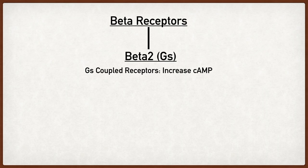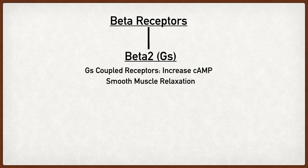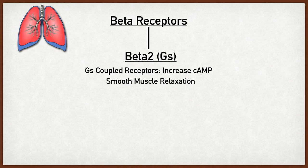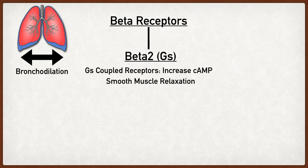The next beta receptor type is beta 2 receptors. Again they're coupled with GS proteins which ultimately increase cyclic AMP levels. The main thing to remember with beta 2 receptors is that they're primarily located on smooth muscles, and whenever a beta 2 receptor on a smooth muscle gets activated it's going to lead to smooth muscle relaxation. For example, there are beta 2 receptors within the lungs. When activated, this leads to bronchodilation, which is important during a fight-or-flight response to open the airways for better breathing and ventilation.